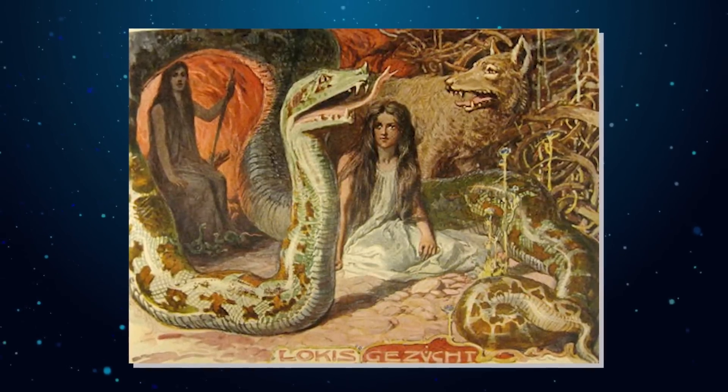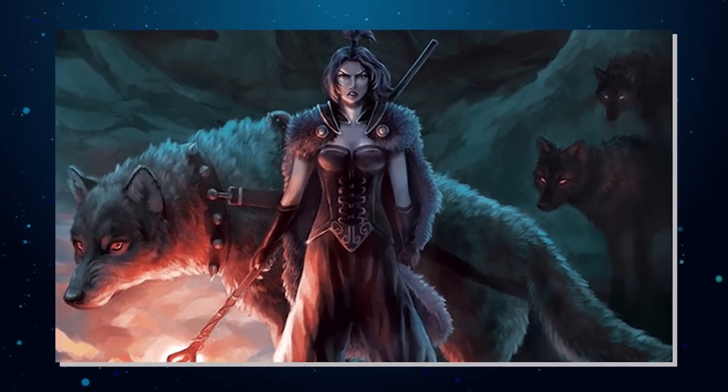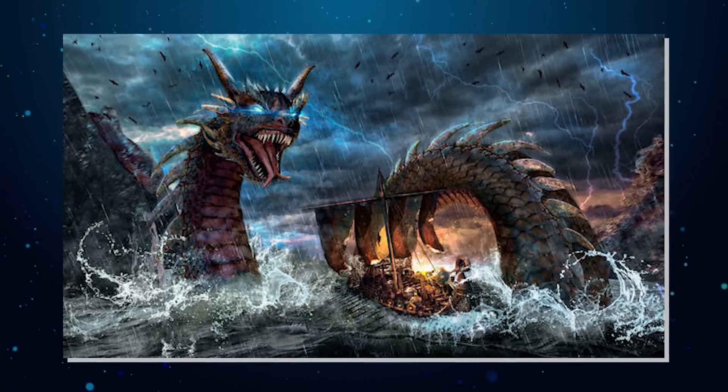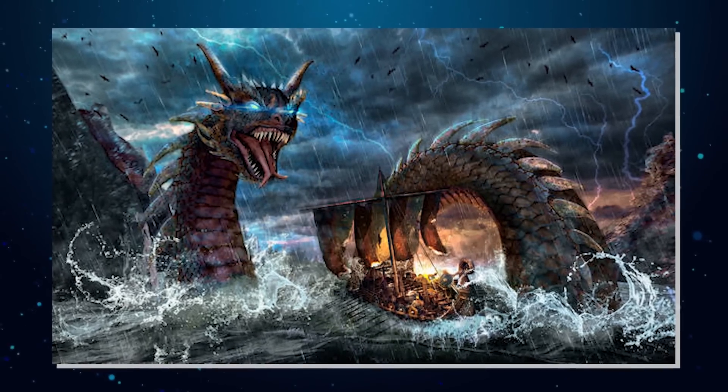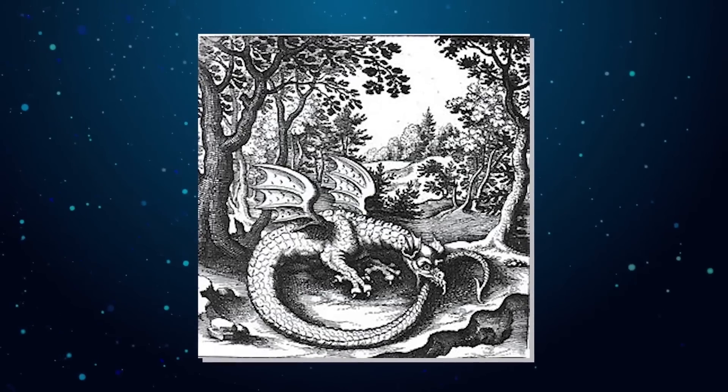In Norse mythology, the serpent Jormungandr is a child of Loki, a clever trickster, and the giant Angerboda. Jormungandr consumes its own tail, and the circle created sustains the balance of the world.